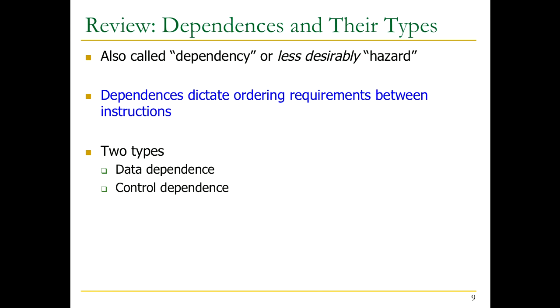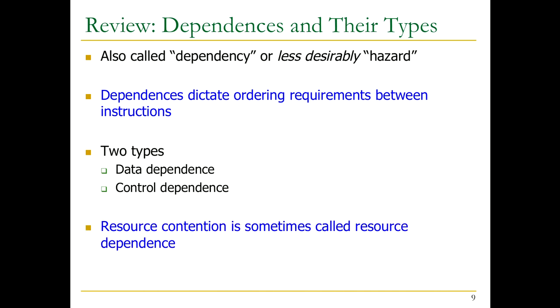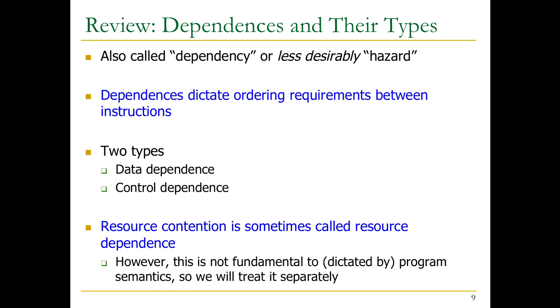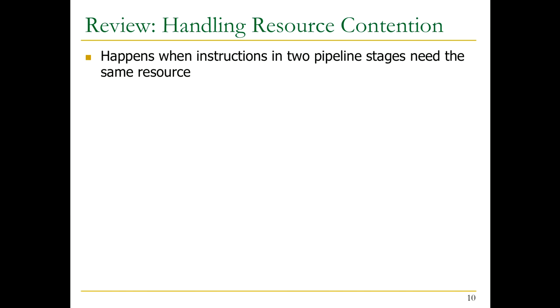Dependencies dictate ordering requirements between instructions, and there are two types: data and control dependencies. Resource contention is sometimes called resource dependence — you're really trying to access the same resource. This is not really fundamental to program semantics; resources are dictated by the hardware, so if you had infinite resources you would never have resource contention.